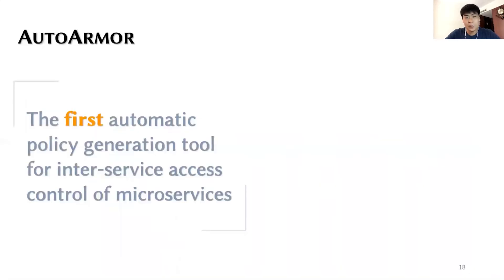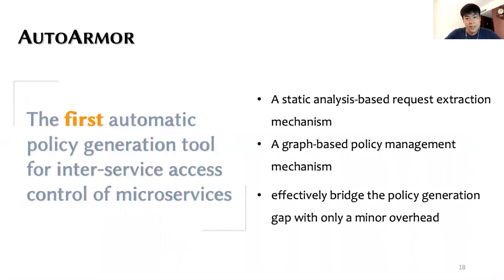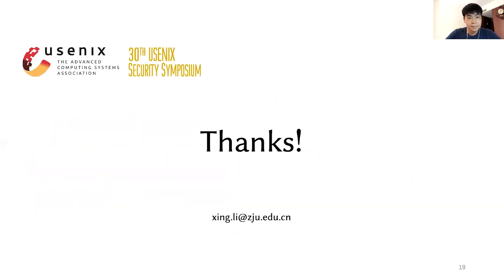We can finally conclude AutoArmor, the first automatic policy generation tool for inter-service access control of microservices. It includes a static analysis-based request extraction mechanism and a graph-based policy management mechanism. Our evaluation shows that it can effectively bridge the current policy generation gap for microservices with only a minor overhead. That's all. Thanks for your attention.